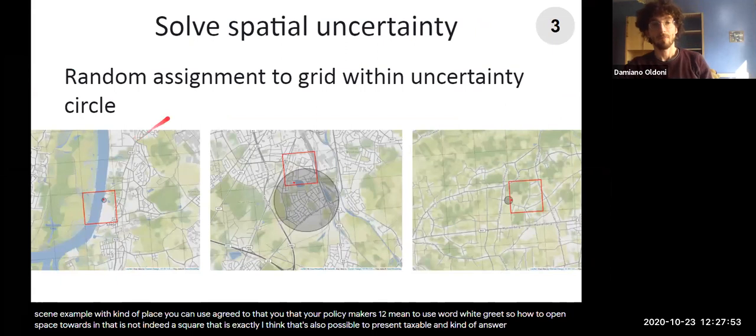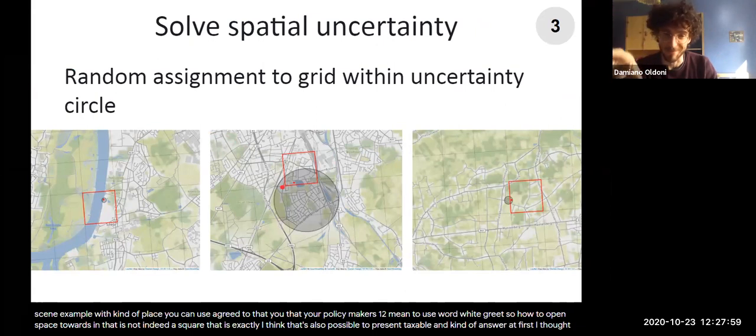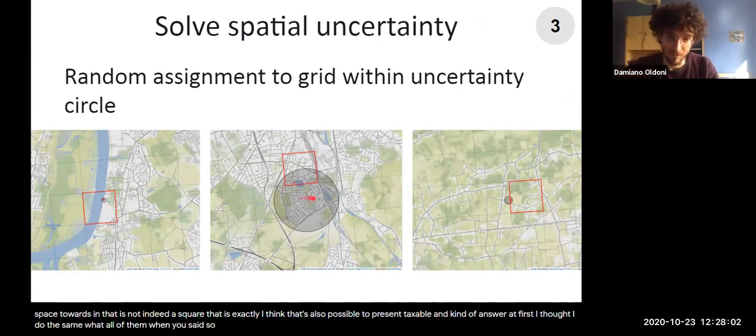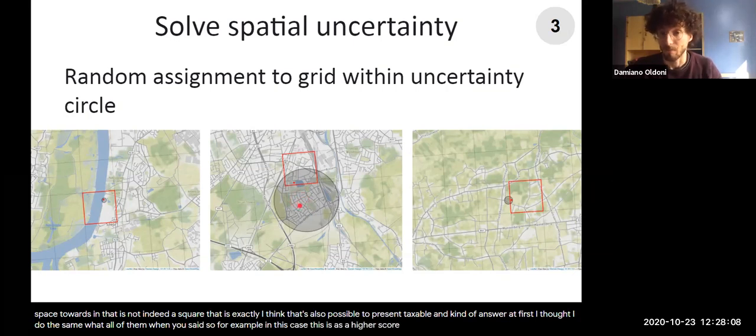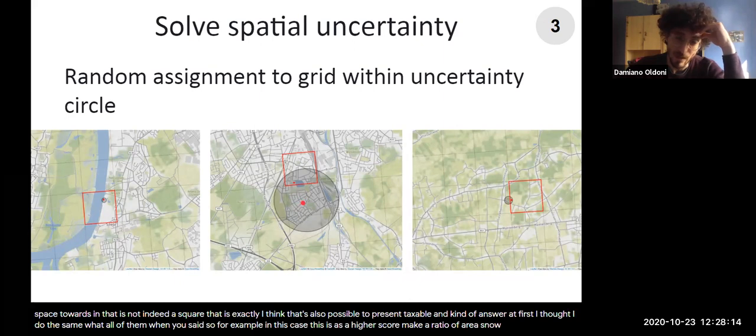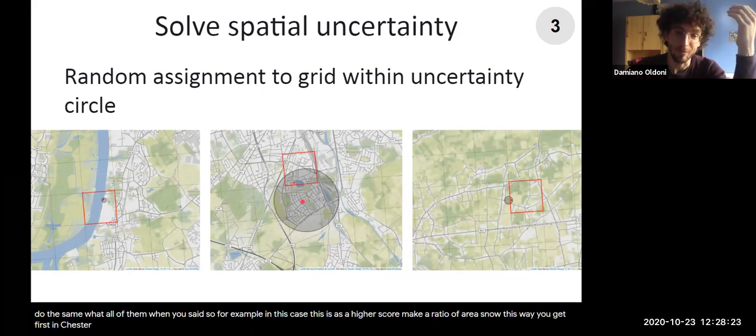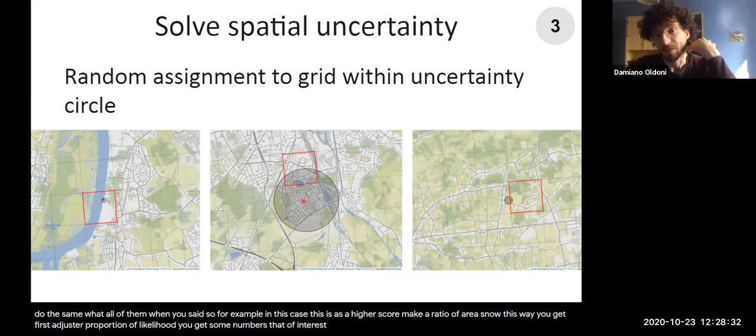Yeah, I understand. Well, the point is that I thought indeed, at first, I thought to do the same, what Paula Zaragozi said. So for example, in this case, this is a higher score, let's say. So we just make a ratio of areas, no? The point is that in this way, you get some... First, it's just a proportion of likelihood. You get some real numbers instead of integers. And at the same time, it doesn't solve this problem, because the center of a square... So you will have, for example, let's say, if you have a big circle here, you have a lot of...